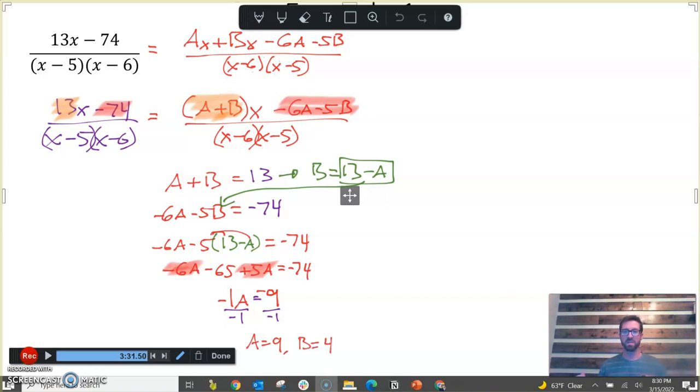And you might be tempted to stop here and say, ta-da, I found A and B. But remember, don't forget what we're doing. Our whole goal was to write the partial fraction decomposition. What we said early on is we said 13x minus 74 over stuff can be broken down into two fractions of the form A over x minus 5 plus B over x minus 6.